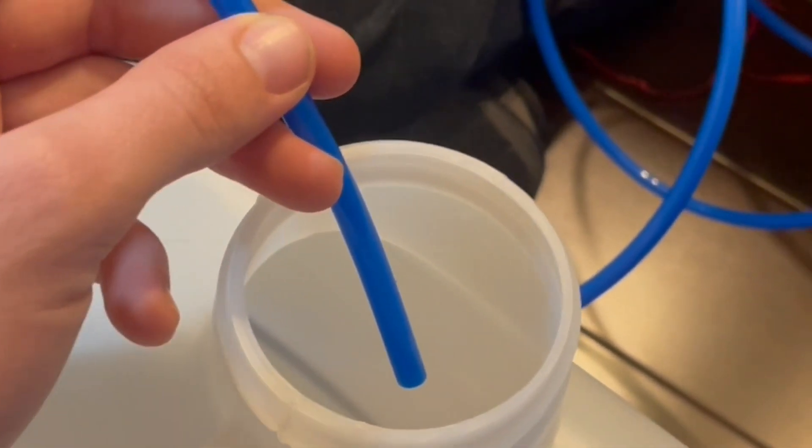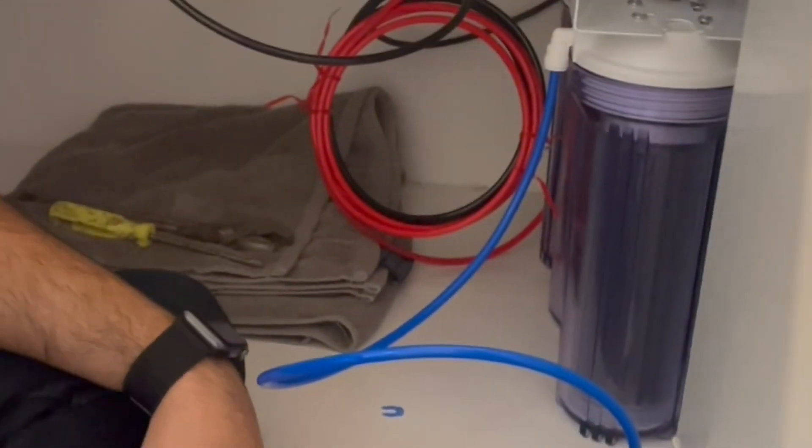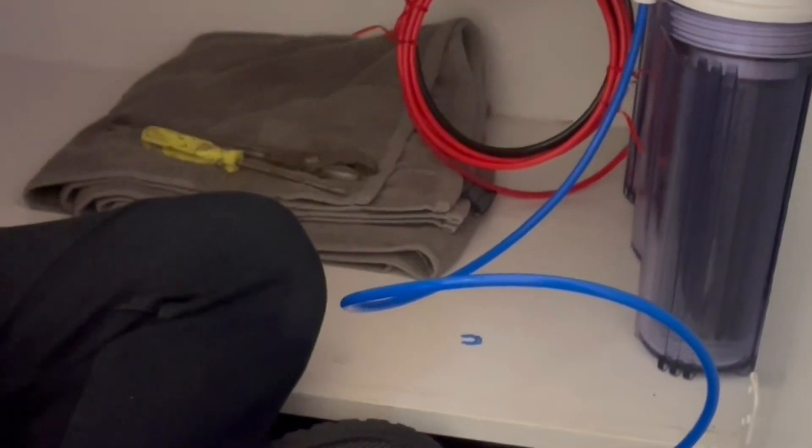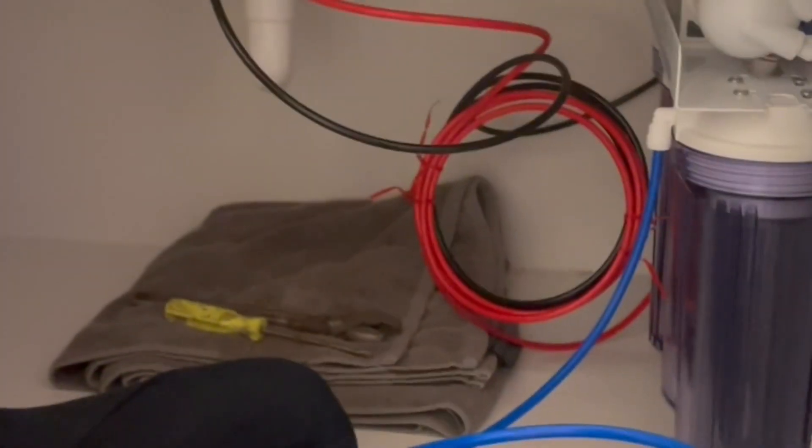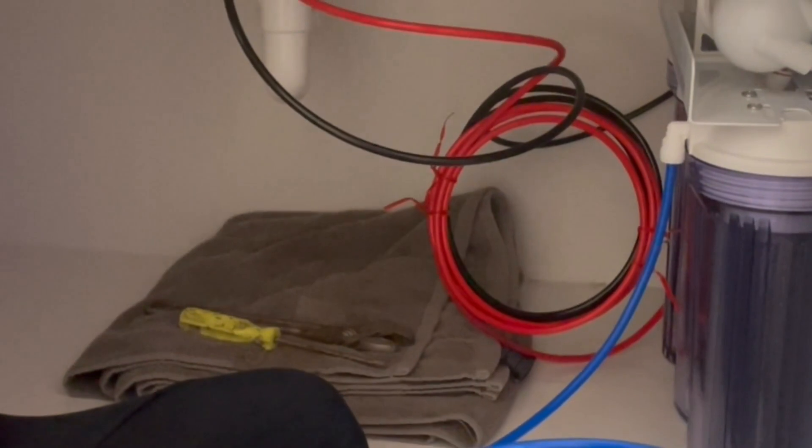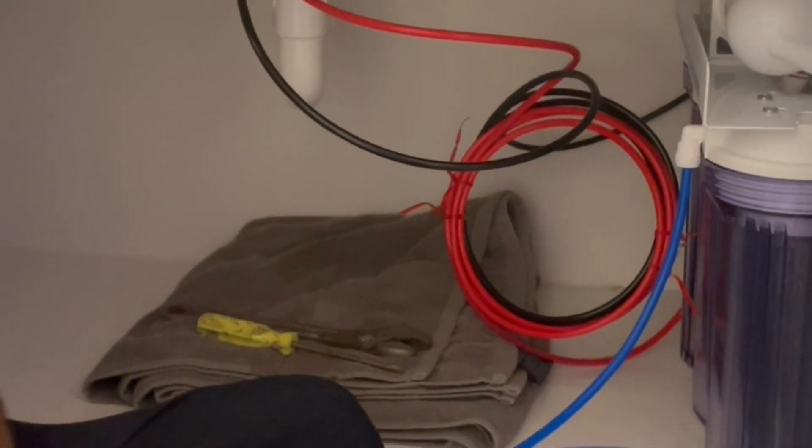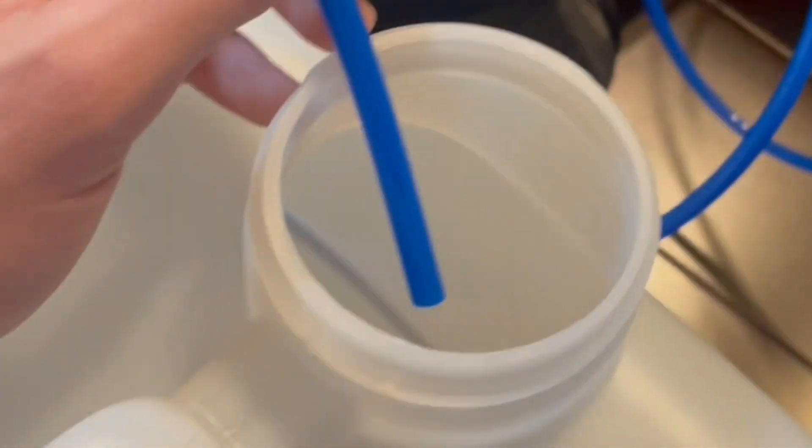So now what we're gonna do is we're gonna have the RODI system on for five minutes, just to flush it out, just so any bad particles get out. Get the carbon block wet and everything, get everything flowing. Make sure that if you already have a previous batch of RODI water, it's just going to an empty container because this will contaminate that water. This water will be wastewater, so dump this water out once you're done with it.